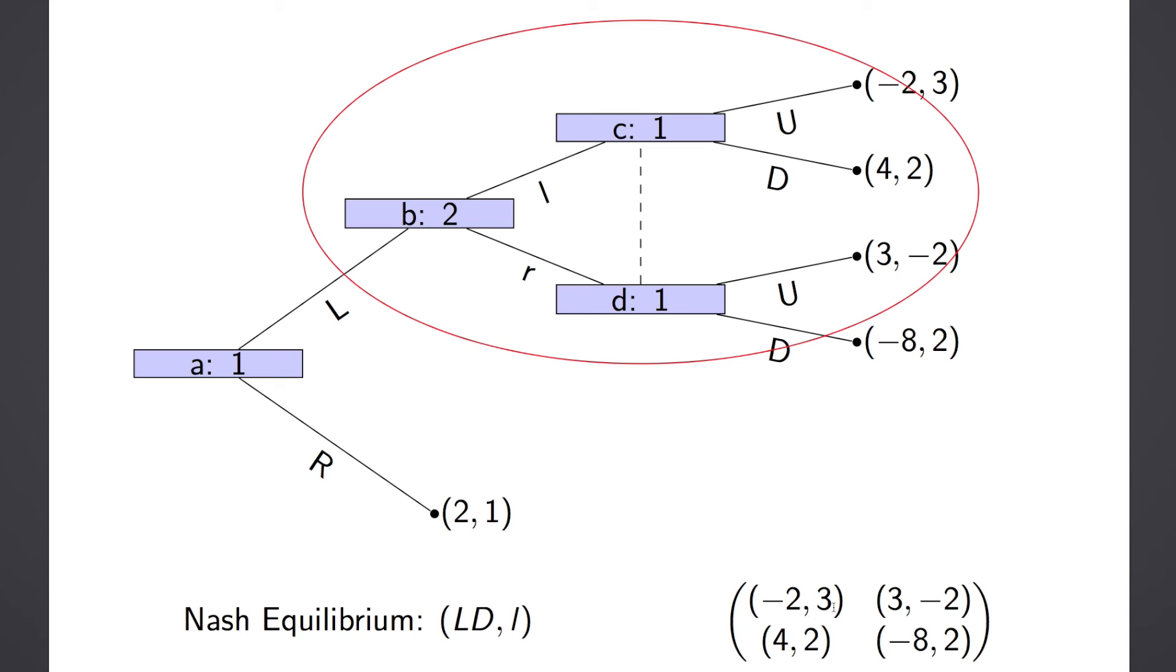And so now we look at this game, and we have to simply check if 4-2 is still a Nash Equilibrium. Again, we can very simply see that this row is the best response to this column. And similarly, this column is the best response to this row, which gives us that, yes, our Nash Equilibrium is subgame perfect.